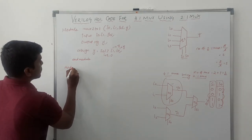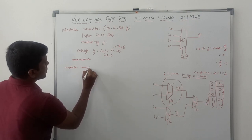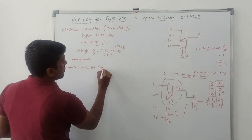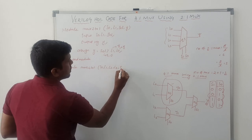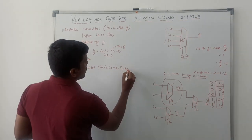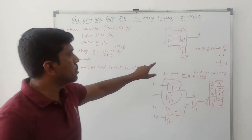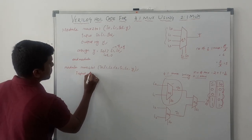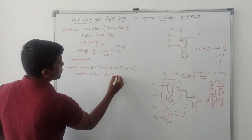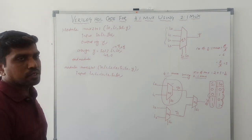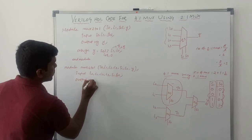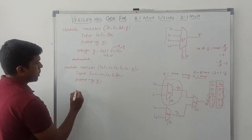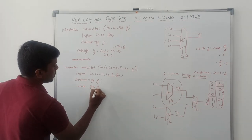Now come to the 4-to-1 mux module. Module name is mux_4to1. It has 4 inputs and 2 selection lines: I0, I1, I2, I3, S1, S0, and output Y. These 6 variables are declared as input. Then output reg Y is declared. In this structure we also have 2 wire signals: wire Y0 and Y1. These 2 signals are considered wire signals.